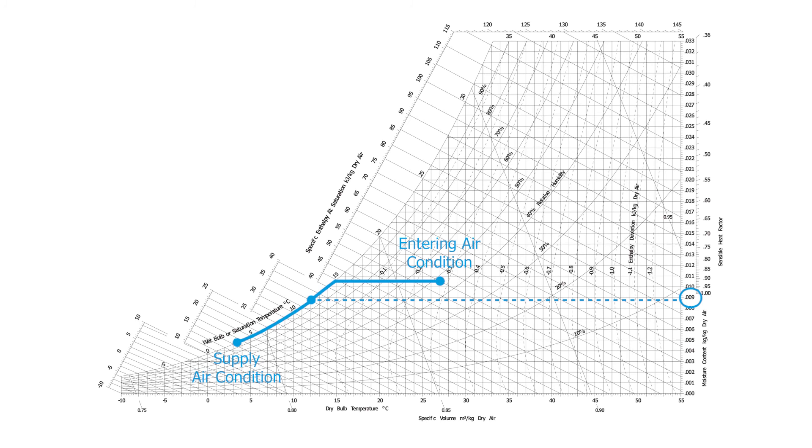If we also plot this on the psychrometric chart, we can see that three and a half degrees dew point has a moisture content of approximately five grams per kilogram of dry air, which is almost half that of the conventional DX system's supply air. With this significantly lower supply air moisture content, the humidity of an indoor space can be maintained at much lower levels.